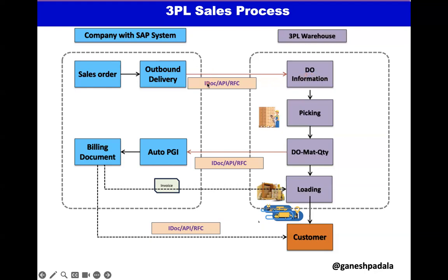Mostly we use IDoc nowadays, but I mentioned APIs also because in the latest S/4 HANA projects I'm observing that APIs are preferred over IDocs. You can also use RFC. The choice depends on your third-party system compatibility, whether you're using ECC or S/4 HANA, and what capabilities you have. APIs and RFCs are encouraged. IDocs can be used where required. One of these interfaces can be used to send the outbound delivery information to the 3PL system.